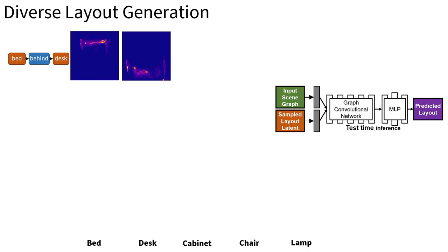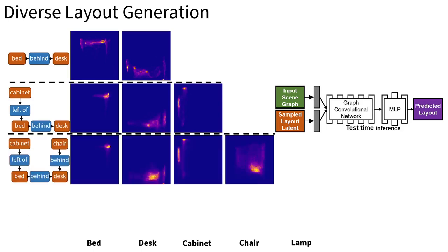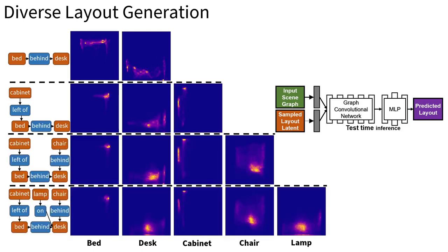Here is an example of generated object layouts from a top-down view, presented as a heat map. On the very left you can see the corresponding scene graph. In this case, we want a bed behind the desk. We start off with two objects, and at the beginning the object distribution is fairly diffuse. We can then add a cabinet left of the bed, a chair behind the desk, and a lamp on the desk. As you can see, the object distribution adaptively becomes more concentrated as we add more objects into a room. The layout generation process is very fast, on the order of milliseconds.